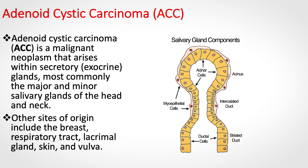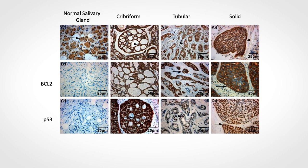The cell of origin of ACC is usually myoepithelial or ductile cells. ACC comes in three forms called cribriform, tubular, and solid. The cribriform and tubular types more closely resemble the normal salivary gland architecture, whereas the solid type is completely undifferentiated.